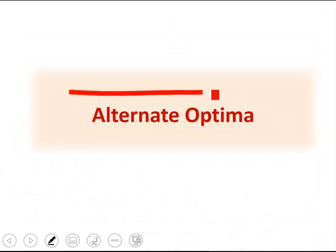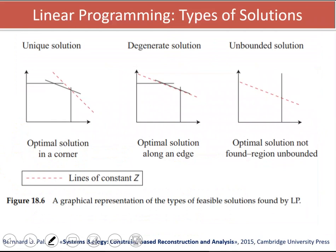First, let me define Alternate Optima. If this is the solution space and this is the objective function to be maximized, this is the direction of maximality. We know that here is the solution space, because that's the intersection of the solution space with our objective function. So in this case, we have an optimal solution in a corner.